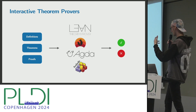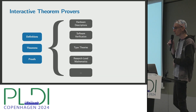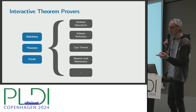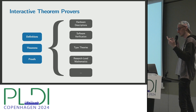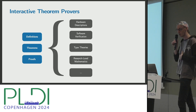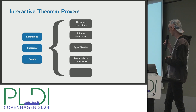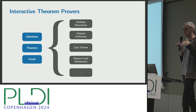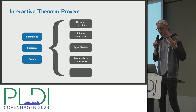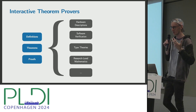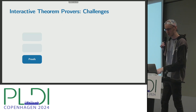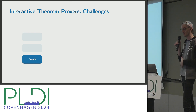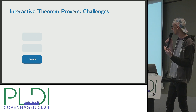What interactive theorem provers can specifically do is check your proofs down to the axioms of some foundation of mathematics. Since these systems are extremely expressive, people have used them to formalize and verify a bunch of different things. In software verification, Coq is pretty dominant — you may have heard of the CompCert C compiler, which is in part verified by Coq. More recently in the Lean theorem prover, people have started to push to formalize and verify research-level mathematics. But there's always a catch: proving things in these systems is really tedious.